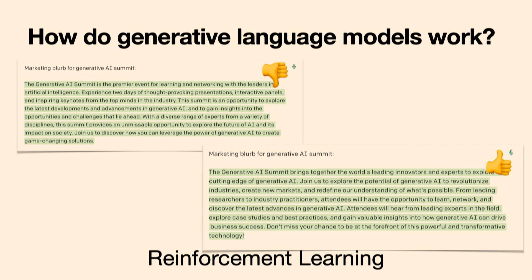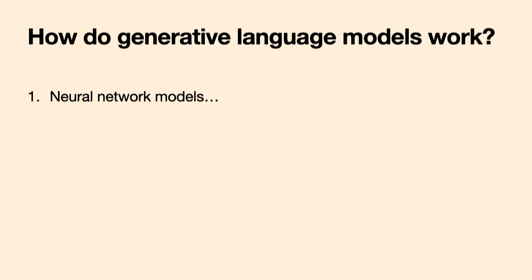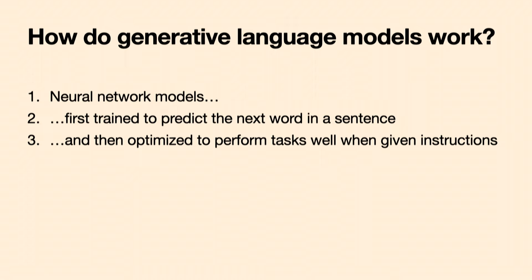Instead we do reinforcement learning, where the model generates lots of examples and people give up or down votes. This is important for getting the model to actually do the task you want, and for giving it negative feedback — telling it what's bad. This has been the main mechanism used to prevent the model from saying harmful things, like giving instructions on how to build a bomb. It's also associated with a lot of unpredictable behavior — reinforcement learning can make models more creative but also higher risk.